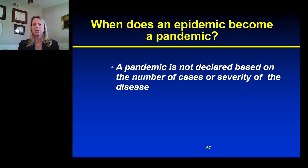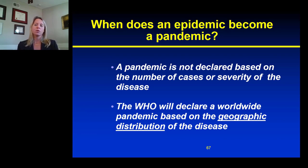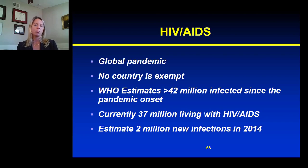So, when does an epidemic become a pandemic? Essentially, a pandemic is not declared solely on the number of cases or the severity of the disease itself, but rather it is declared when there is a geographic distribution of that disease — that is, it's distributed in two or more regions of the world.